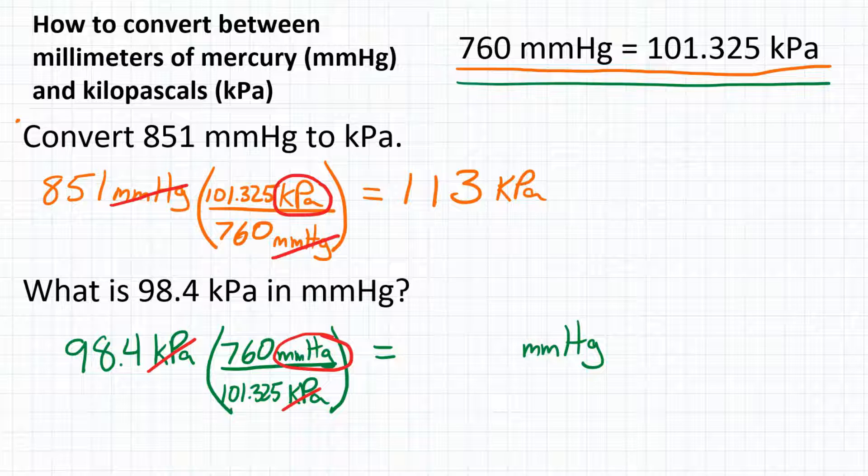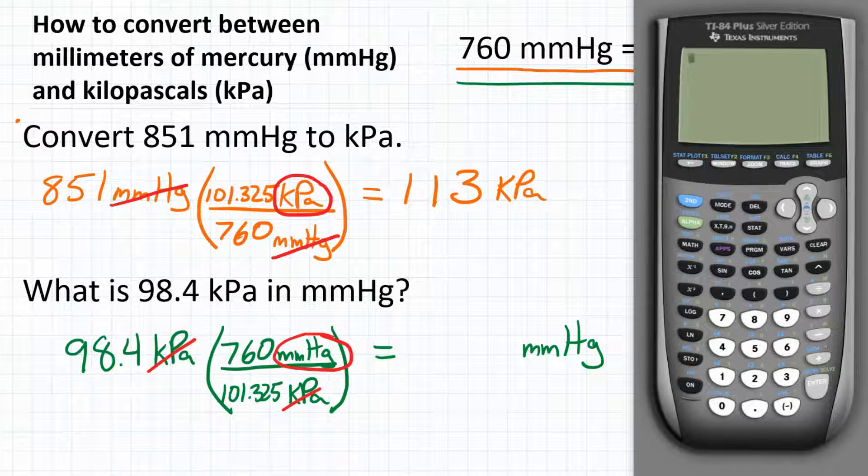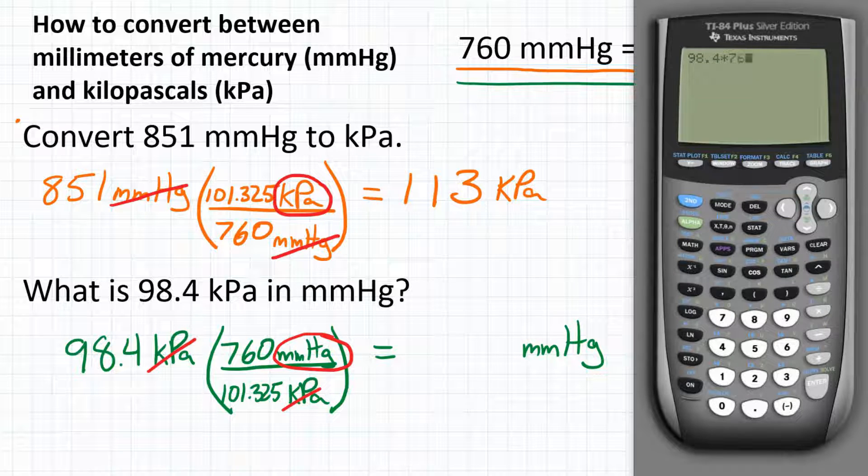Now we can plug this in our calculator. We're going to start with 98.4, and again multiply by the top and divide by the bottom of our conversion factor. So multiply by 760 and divide by 101.325.